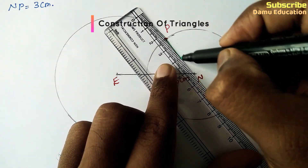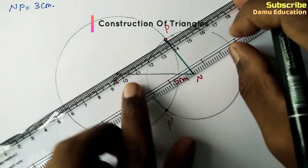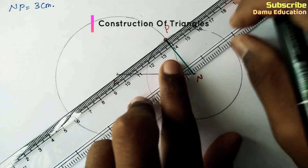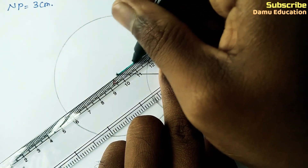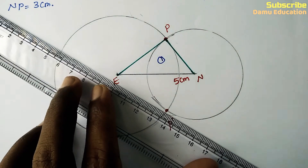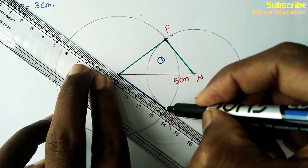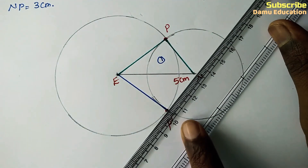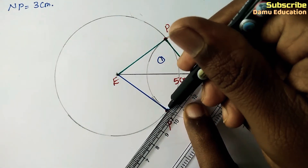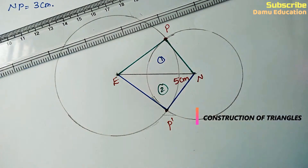Join PEN — that is, join P, E, and N — so we got one triangle. That is the first triangle. Then join P dash, E, and N, so we got a second triangle.